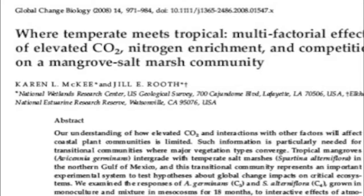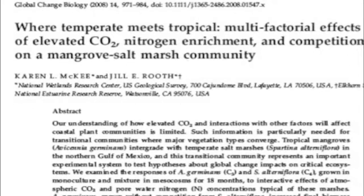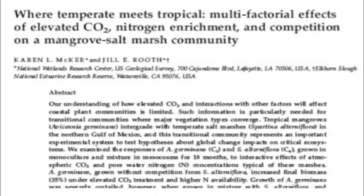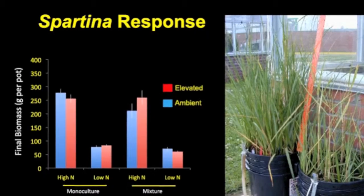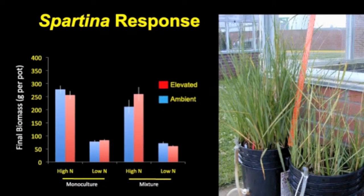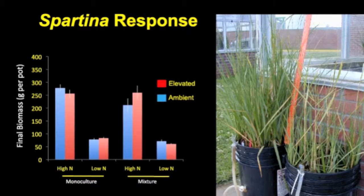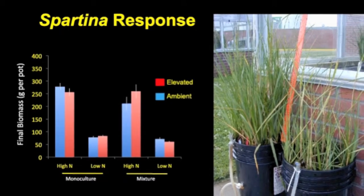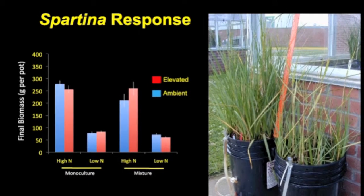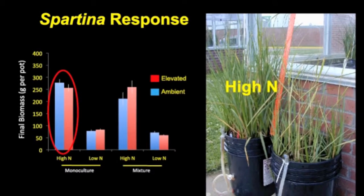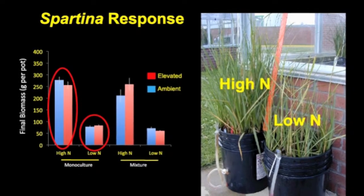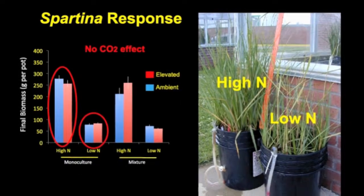The results of this study, published in the refereed journal Global Change Biology, provided some important insights. The graph to the left shows the final biomass of the C4 grass Spartina in grams per mesocosm, and on the right is a photograph taken just before the end of the experiment. The data and the photograph clearly show a strong response to higher nitrogen, which caused higher stem density in taller plants compared to low nitrogen. There was no effect of CO2, as predicted.